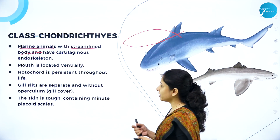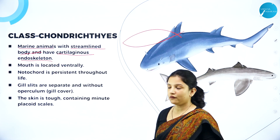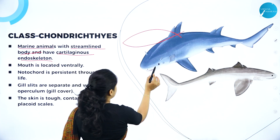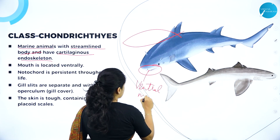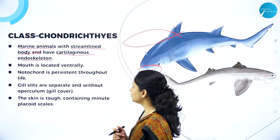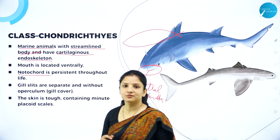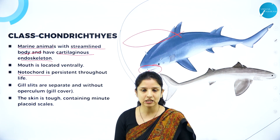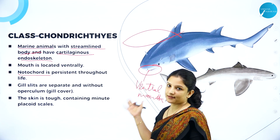They have an endoskeleton which is cartilaginous — that is, it is made of soft bone. Their mouth is located ventrally, that is at the lower side of the body. Notochord is present, and we all know that in vertebrates the notochord is present only in the embryonic stage. Later on, when they develop into an adult, it gets replaced by a cartilaginous vertebral column.